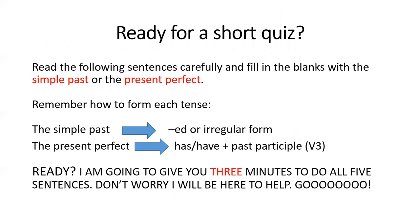Ready for a short quiz? Read the following sentences carefully and fill in the blanks with the simple past or the present perfect. Remember: the simple past is formed with 'ed' or an irregular form; the present perfect uses 'has' or 'have' plus the past participle. Note that 'has' is used with he, she, it, and 'have' is used with I, we, they, you. I'll give you three minutes — stop the video, copy the sentences into your notebook, and try to solve each one.